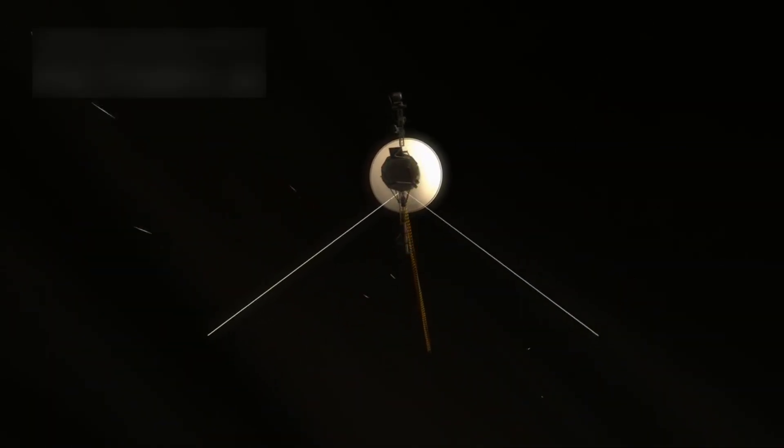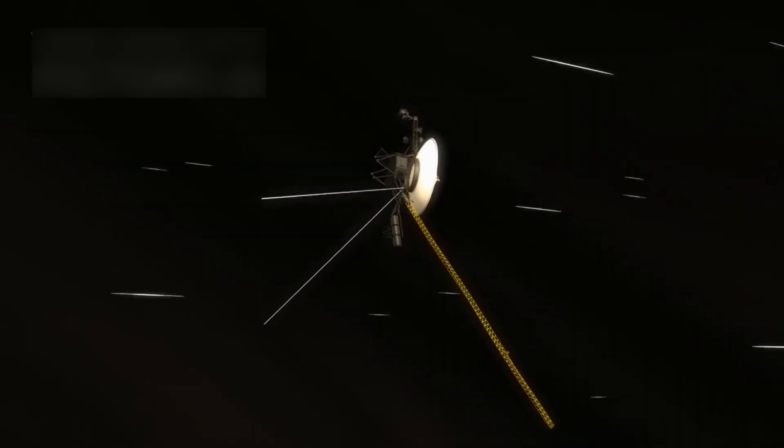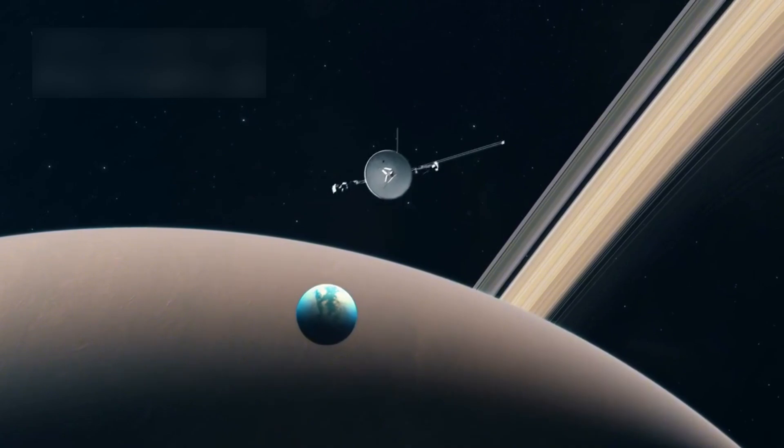As Voyager 1 kept flying, it continued to operate decades past its expected lifespan. It has now been working for over 45 years, traveling more than 14 billion miles from Earth.